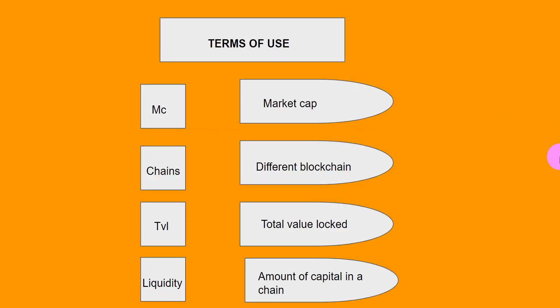Before we go into the main content, I want to talk about some of the terms I'm going to be using in this video. One of those terms is MC — market cap. If you are into cryptocurrency you should already know what market cap is about. We're also going to be talking about chains, which are the different blockchains that these DeFi projects are hosted on. We are also going to be seeing abbreviations like TVL, which is the total value locked on a project, and liquidity, which is the amount of capital in a particular chain.